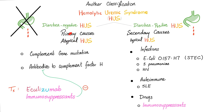To manage atypical HUS, you can try eculizumab and immunosuppressants. For diarrhea-positive secondary HUS, treat the underlying condition. The E. coli O157:H7 infection is self-limited — do not give antibiotics and do not give platelets unless there is life-threatening bleeding.